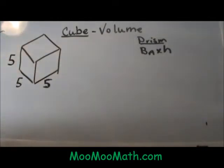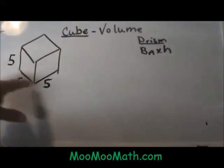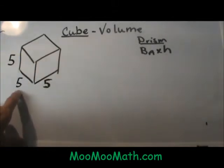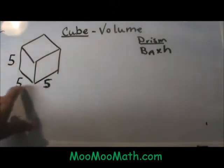It has six sides, six faces, four sides on the base, and they are all equal. This particular cube has sides of 5, 5, and 5.